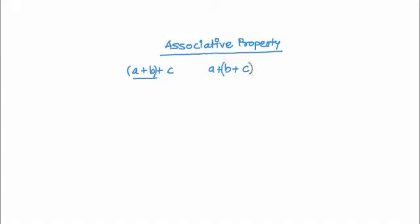So in this case, I add a plus b and to the result of a plus b, I add c. But here what I'm doing is I'm first adding b plus c, and the result of b plus c I'm going to add into a. And if they are equal, we say that those numbers are associative under addition.